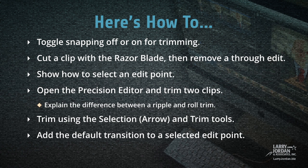Let me show you how to toggle snapping off or on for trimming, how to cut a clip with a razor blade and then remove a through edit. I'll show you how to select an edit point and then open the Precision Editor and trim two clips. I'll explain the difference between a ripple and a roll trim, show you how to trim using the selection and the trim tools, and then we'll wrap up by adding the default transition to a selected edit point.